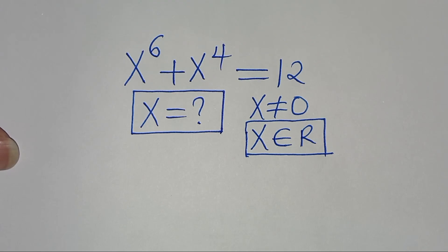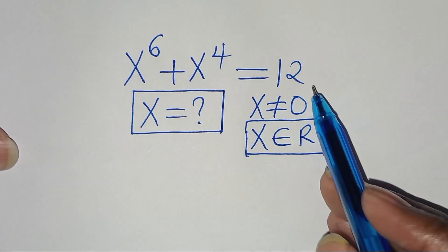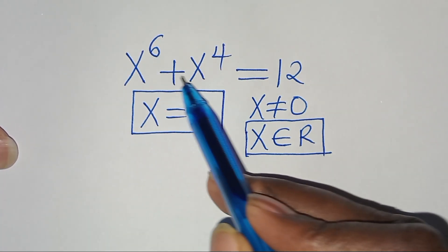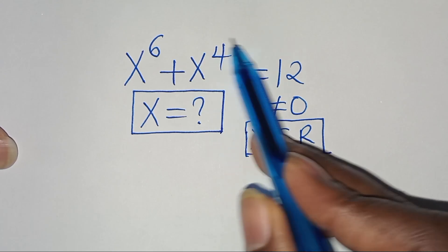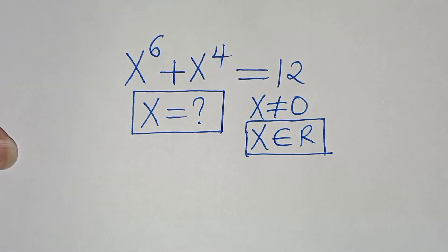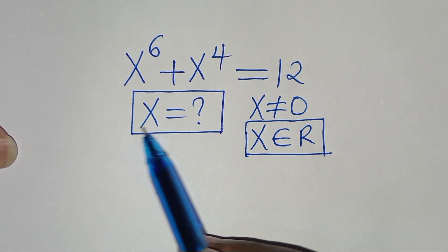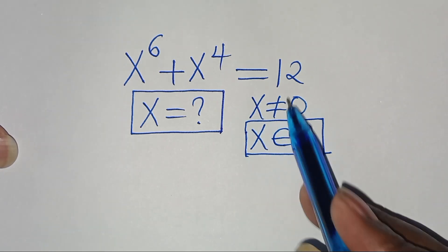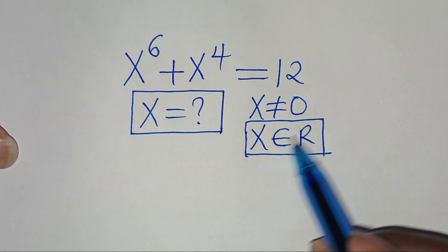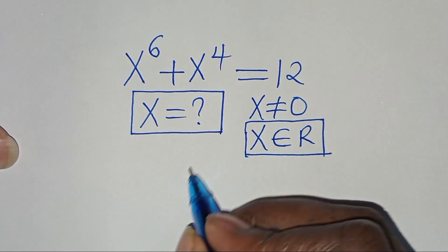Hello everyone, you are welcome to solve this nice algebra problem, which is x to the power of 6 plus x to the power of 4, this is equal to 12. What is the value of x, given that x is not equal to 0 and that x is a member of real numbers?